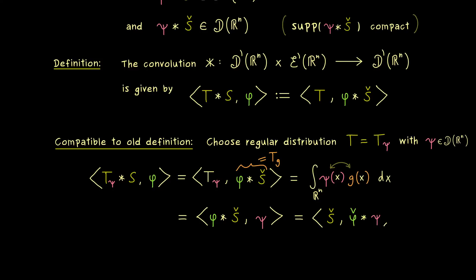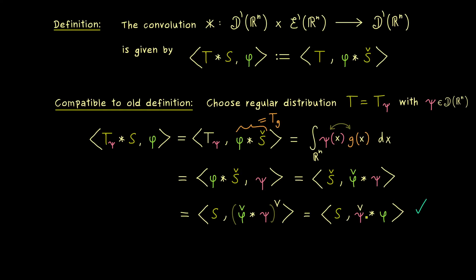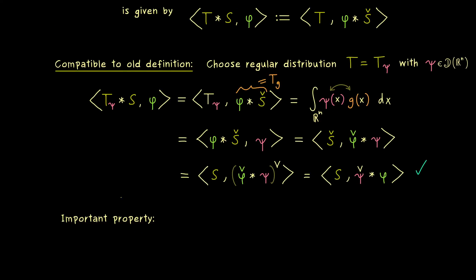This is exactly how the old definition worked. The only thing left is to push the check from the left hand side to the right hand side, using the definition of the reflection operator for distributions. For ordinary functions we calculate how the reflection operator acts in the convolution, and it's not hard to see that the check cancels with phi and goes to psi. Since the convolution is commutative for test functions, we can exchange the order, giving psi.check star phi. This is exactly our old definition, so it does not matter which of the two definitions we choose — the extension is consistent.